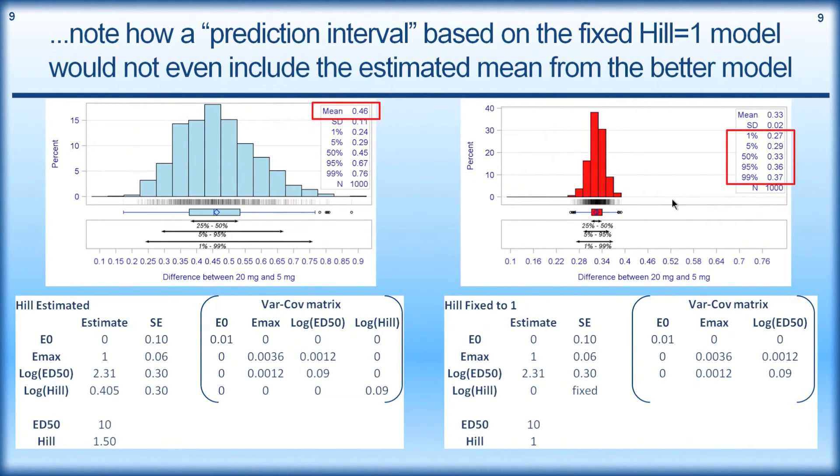And this is completely inconsistent with when we fix the Hill coefficient to 1. So really, just because we have a lack of information here on the precision of the Hill coefficient, we're going to conclude we're very confident about the size of the differences between 5 and 20, when the reality is that we really don't know a lot about the differences between 5 and 20, and we should reflect that.